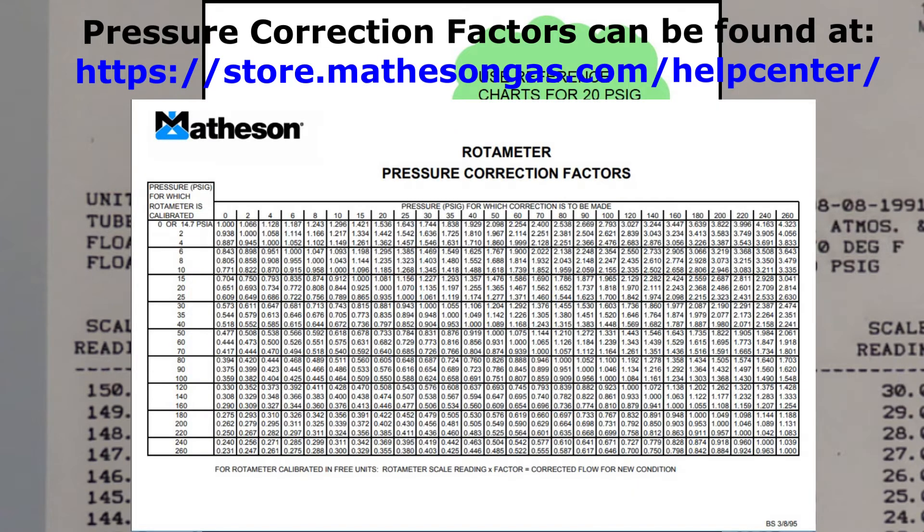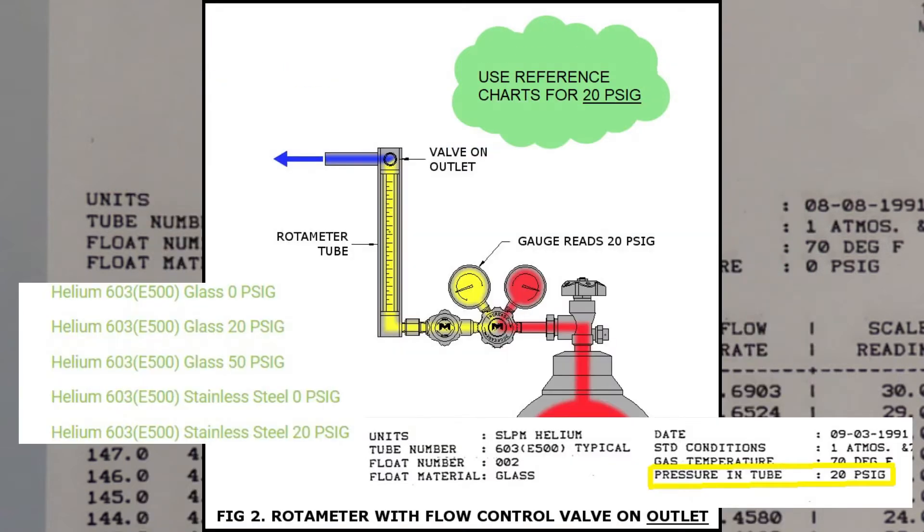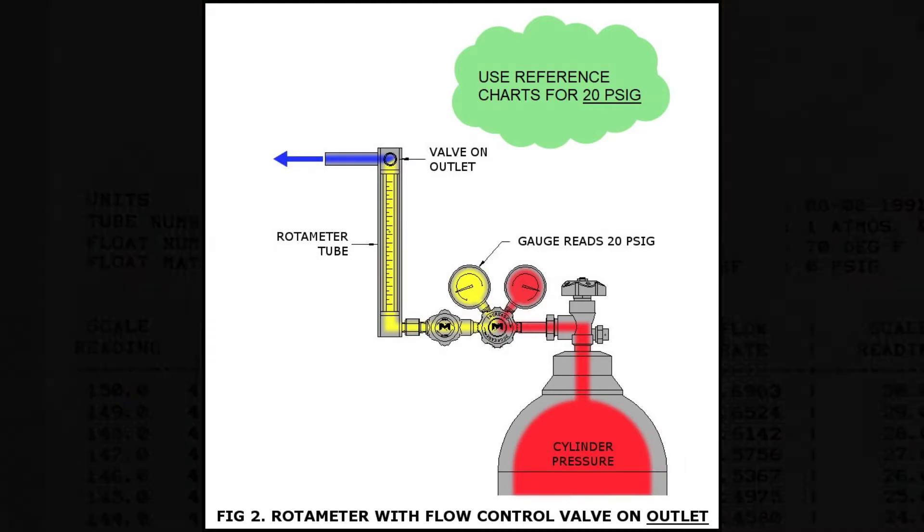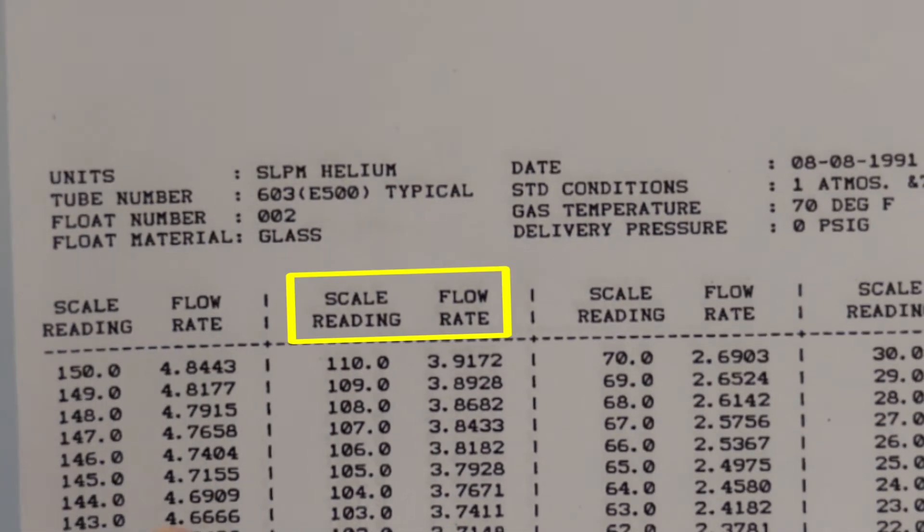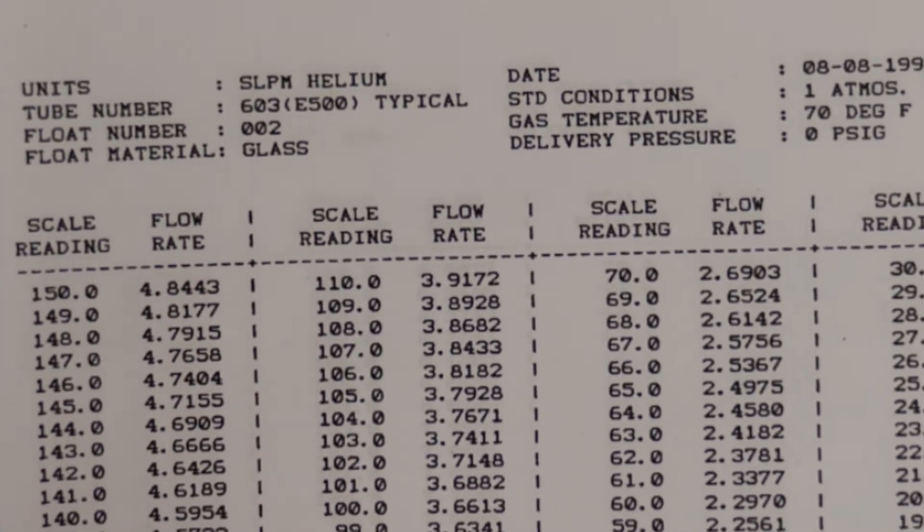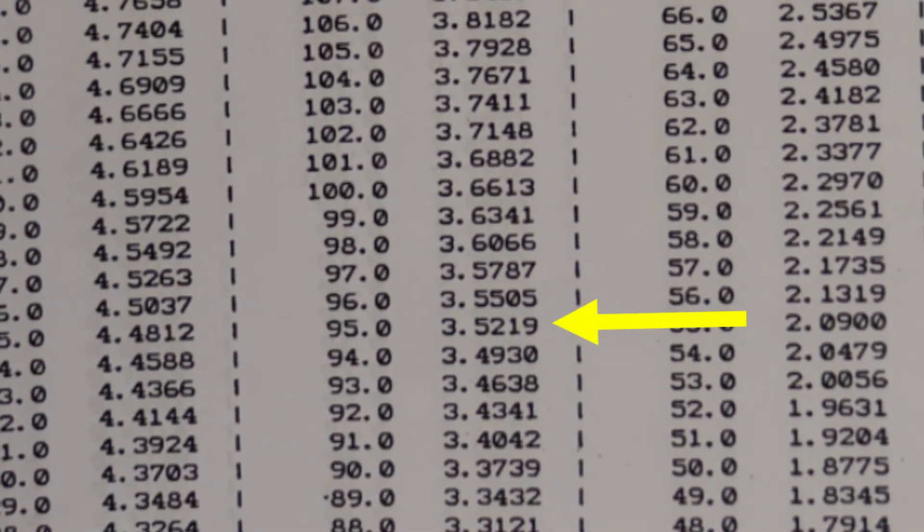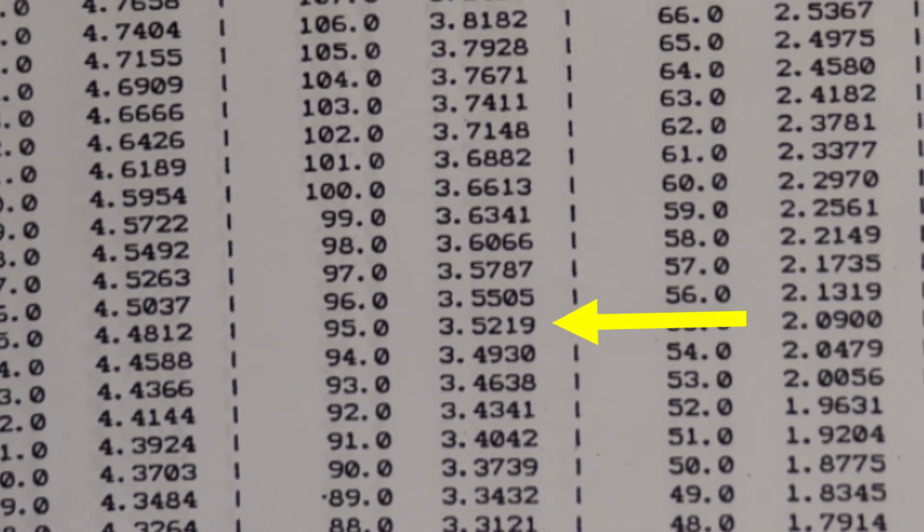So we'll locate 95 under the scale reading, 95 millimeters. We can see that it corresponds with 3.5219 standard liters per minute helium.